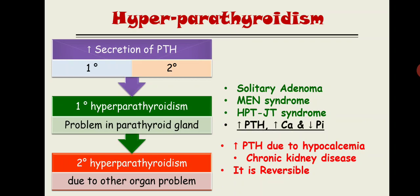To summarize the distinction: in primary hyperparathyroidism there is increased PTH, increased calcium, and decreased phosphate. In secondary hyperparathyroidism there is increased PTH, decreased calcium, and increased phosphate.